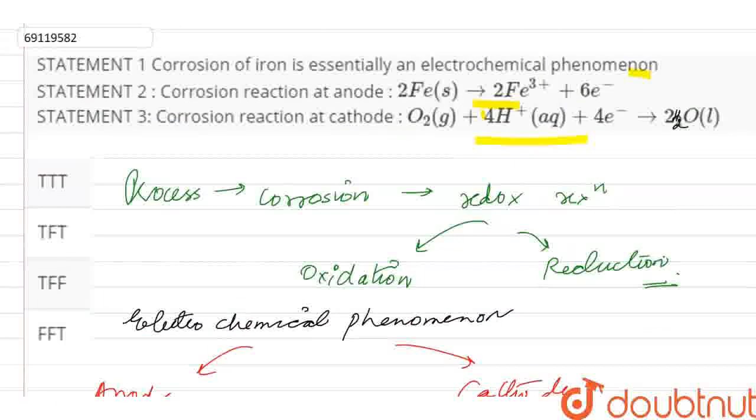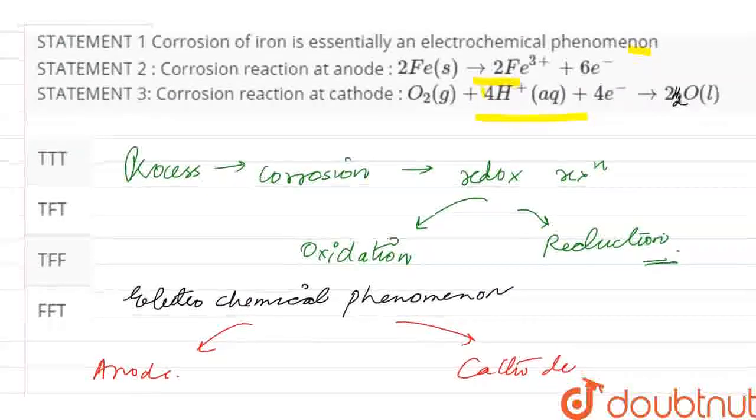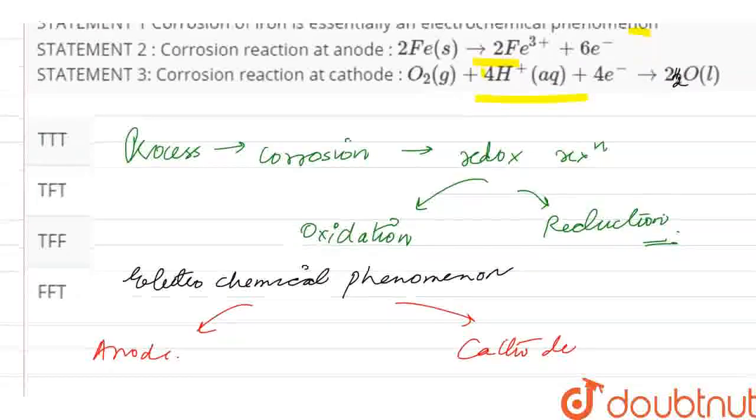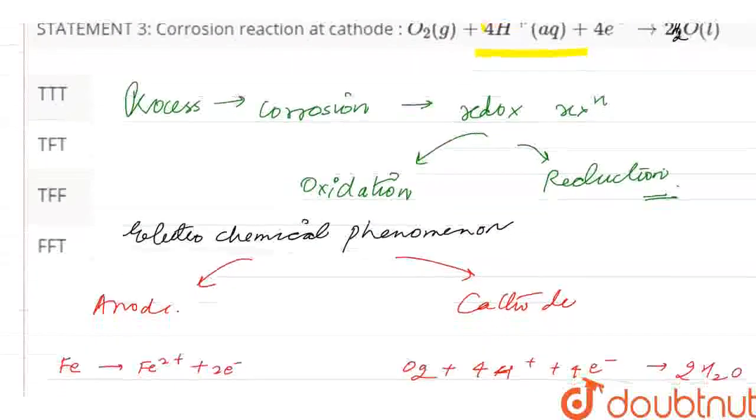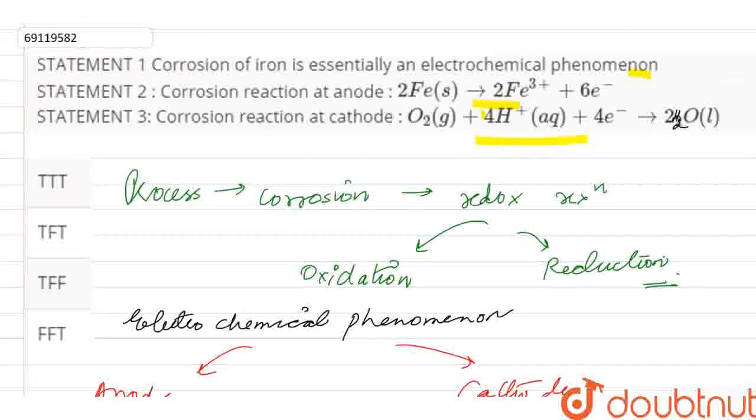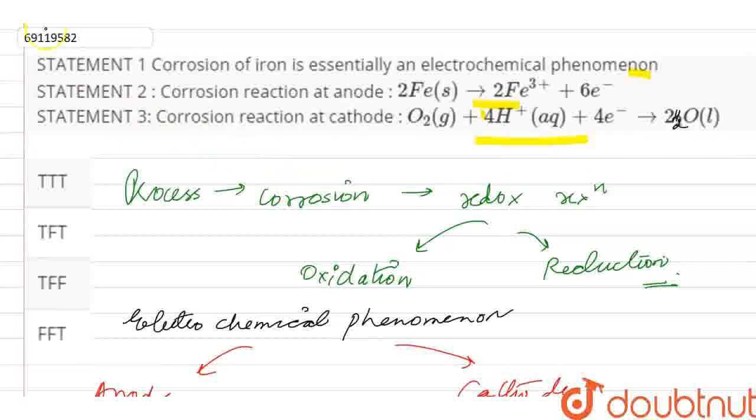If we match our statements, then the first is true and the second statement about Corrosion Reaction at Anode giving Fe3+ is false, it gives Fe2+, so the second statement is false and the third statement is correct. So this is true, false, true. My correct answer is true, false, true. Thank you.